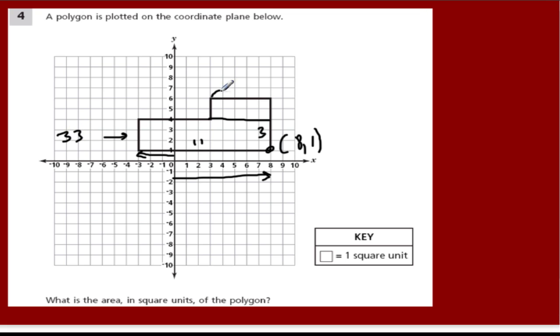Meanwhile, the one on top has a 5 by 2 or an area of 10. We add them up, and we have 33 square units.